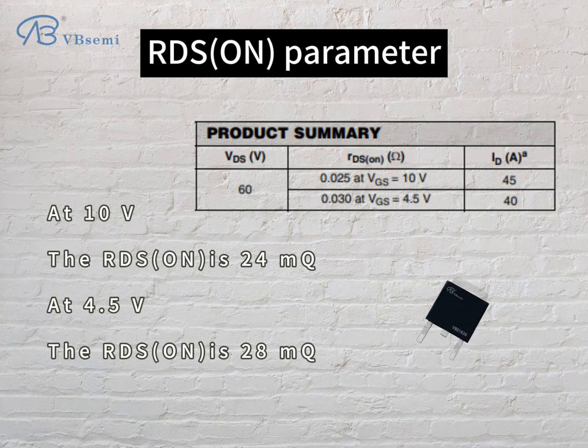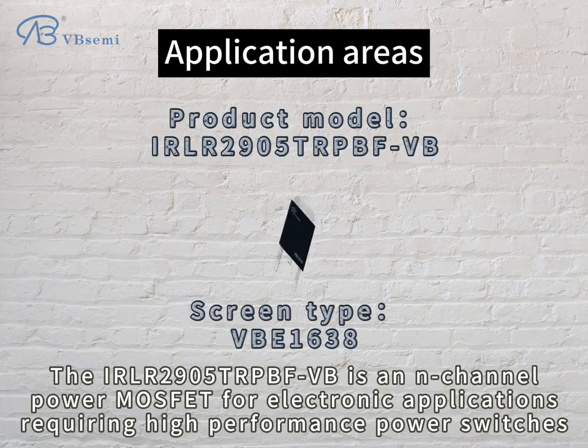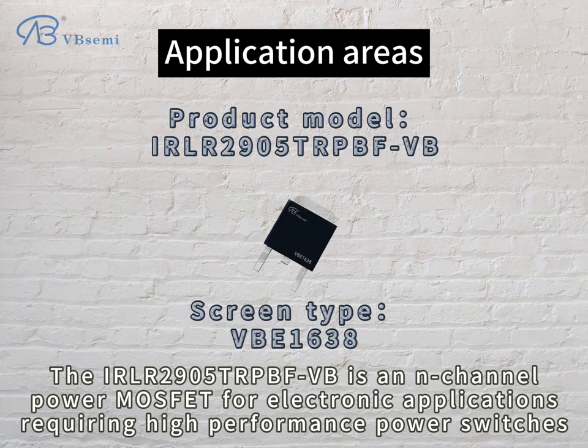At 4.5V, the RDS(on) is 28mΩ. The IRLR2905TRPBF-VB is an N-channel power MOSFET designed for electronic applications requiring high-performance power switching.